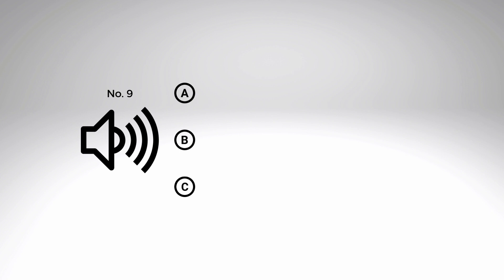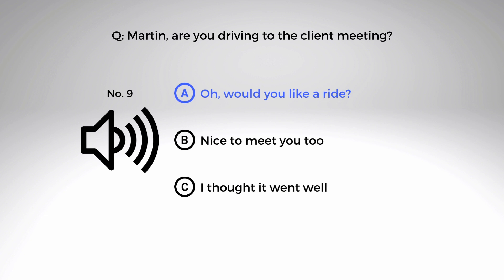Number nine: 'Martin, are you driving to the client meeting?' A. Oh, would you like a ride? B. Nice to meet you too. C. I thought it went well. The correct answer is A — 'Oh, would you like a ride?' This is an example of an indirect response to a yes or no question. The question could be answered with a simple 'yes, I am' or 'no, I'm not.' However, in this example, the question is answered with another question.